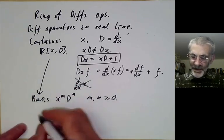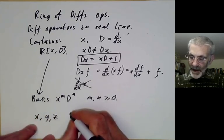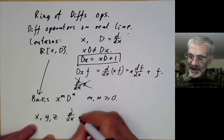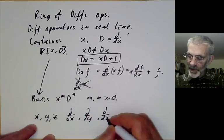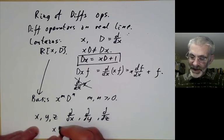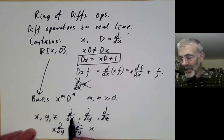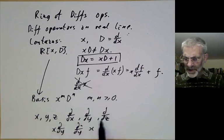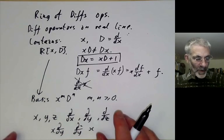You can do this in several variables - take x, y, z and d/dx, d/dy, d/dz as your operators. Notice that x and d/dy commute, but x and d/dx don't quite commute. It looks like a polynomial ring in six generators except it's not quite commutative.